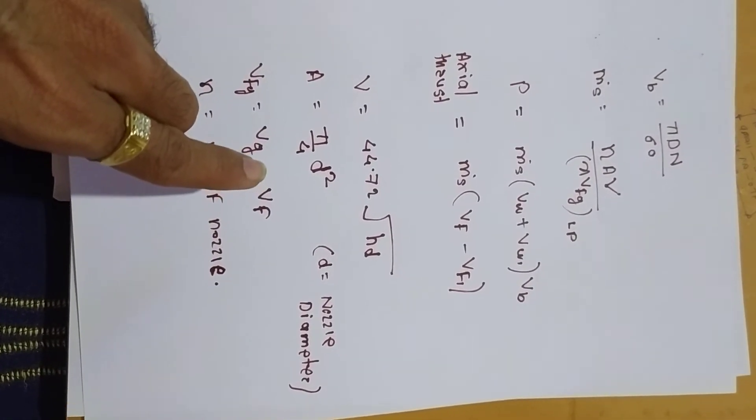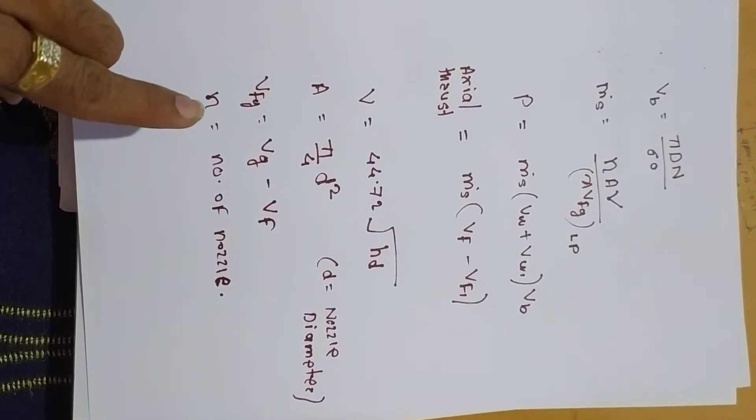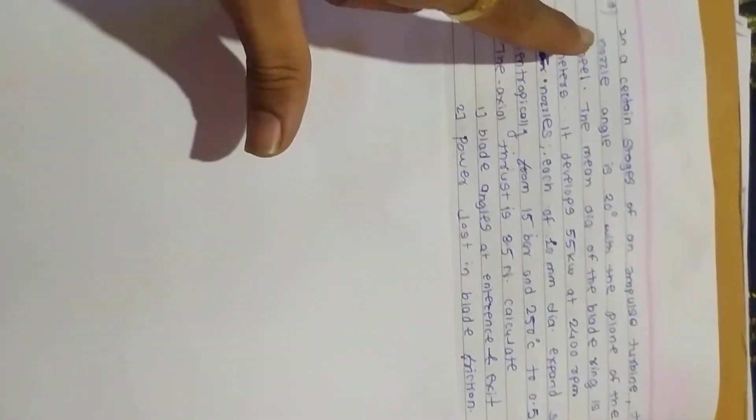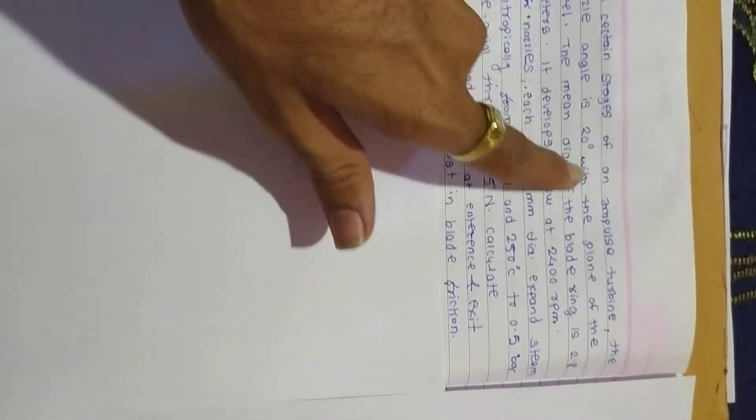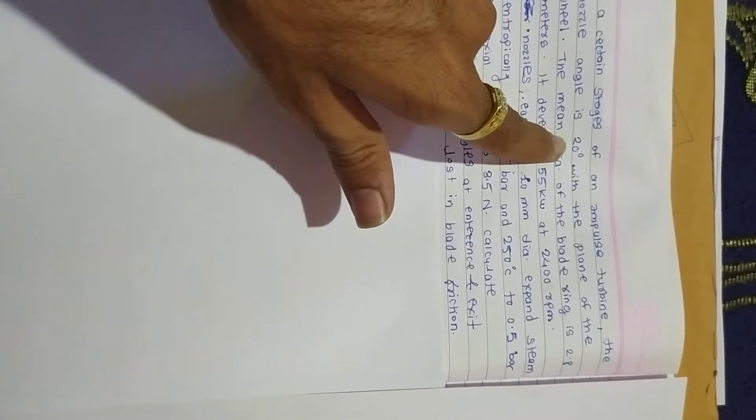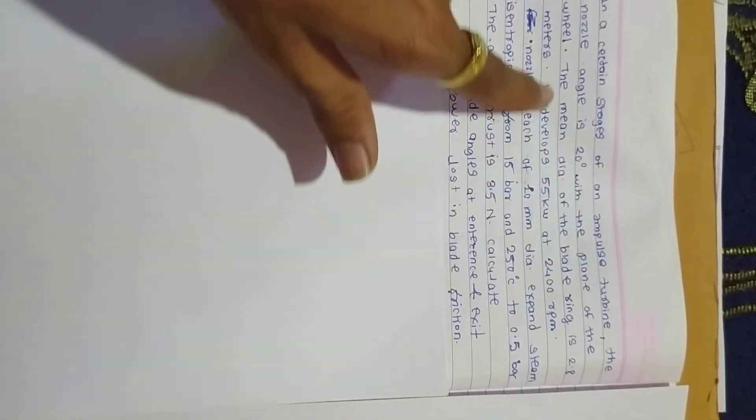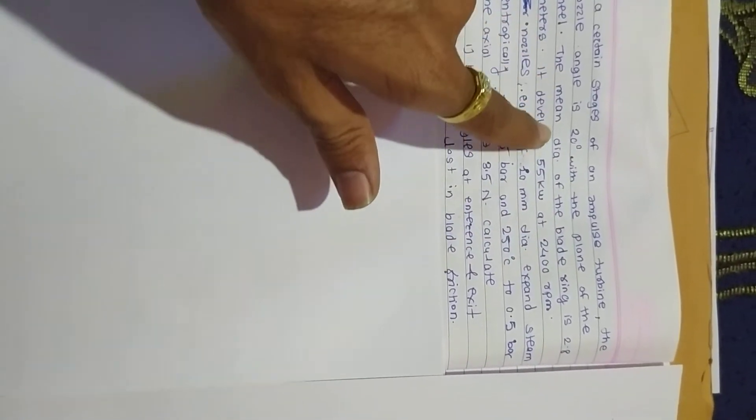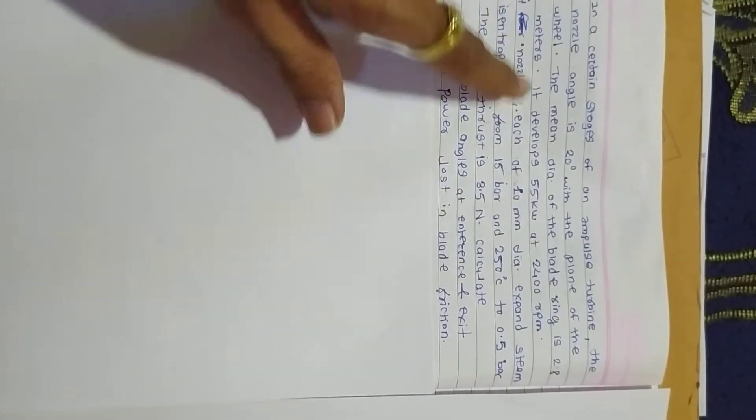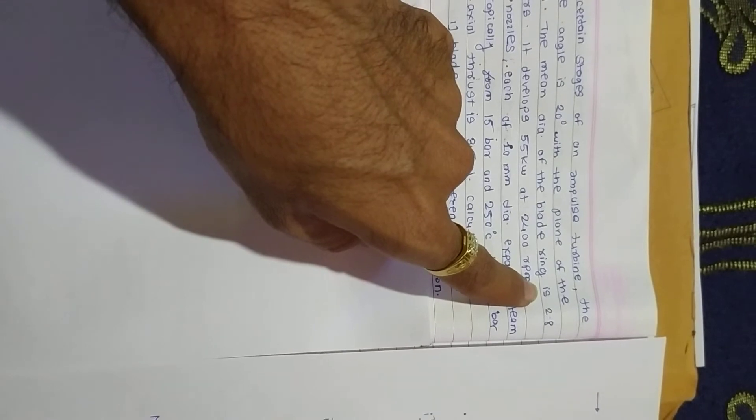See the numerical: In a certain stage of impulse turbine, the nozzle angle alpha is 20 degrees with the plane of the wheel. The mean diameter of the blade ring is 2.8 meters, so the drum diameter is 2.8.